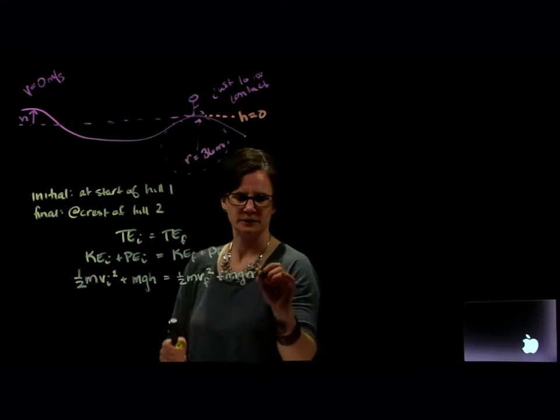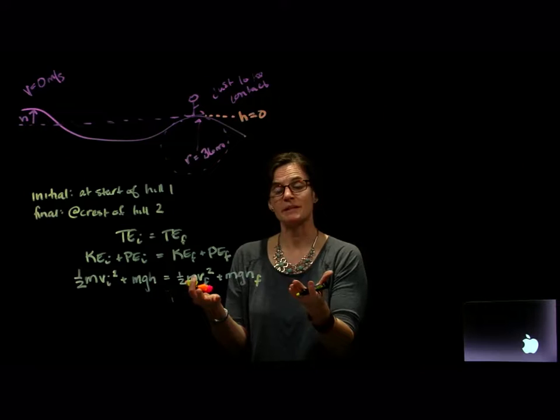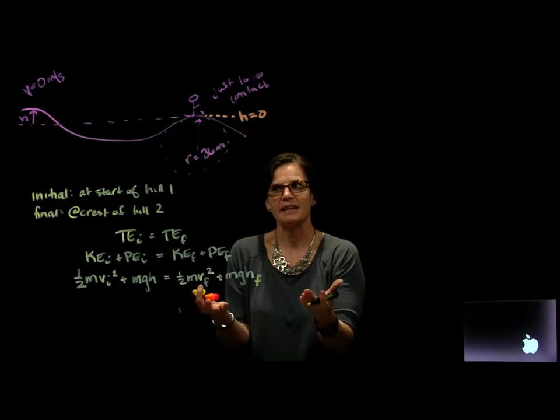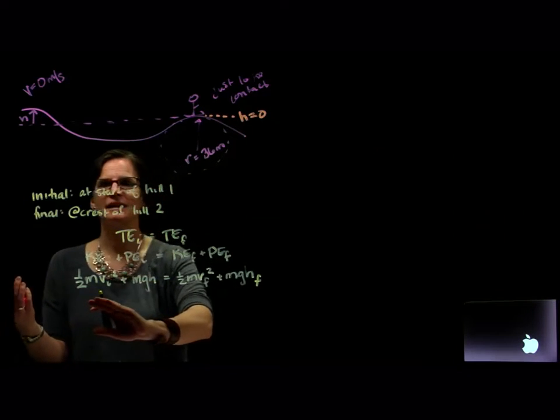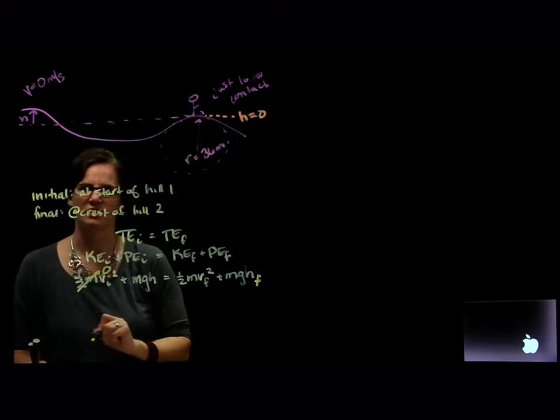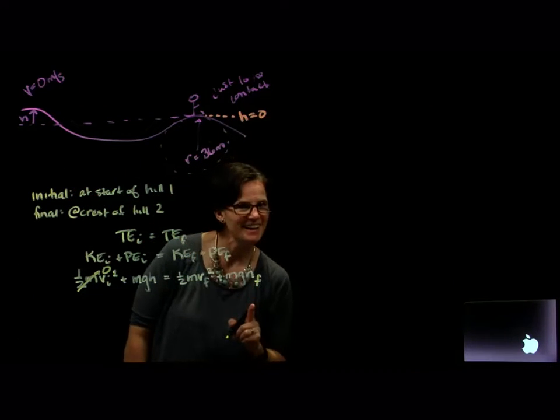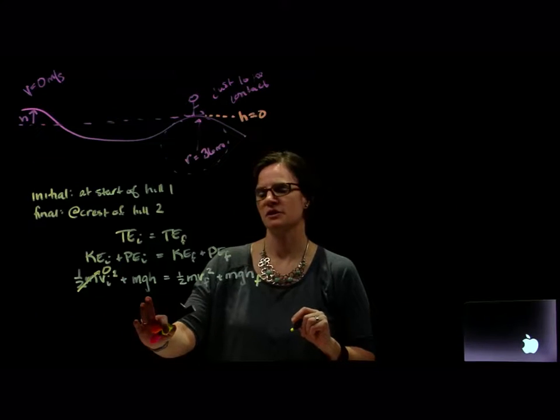So there are a couple things we can look at in this relationship to simplify it if we understand the idea of what these energies are. Kinetic energy, the initial kinetic energy, well it's not moving at the beginning. So there is no kinetic energy to begin with. All of the energy of the skier is in his potential energy.